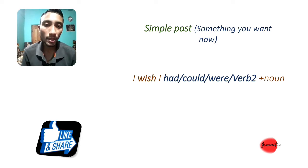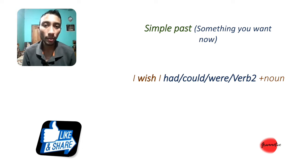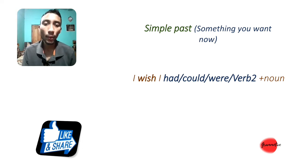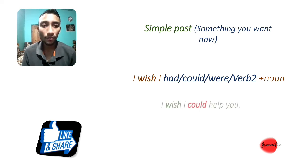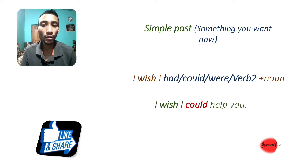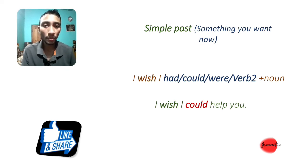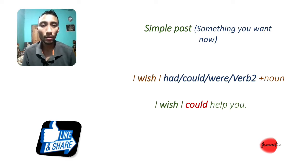You can write: subject + wish + subject + could/would/were + base verb form + noun. First example: I wish I could help you. This is a wish, but this wish is not possible — meaning I cannot help you right now.